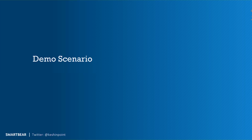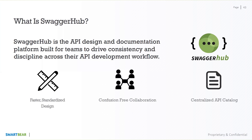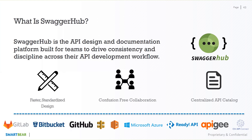Thank you for bearing with me so far. Now let's see some of these things in action. SwaggerHub is an API design and documentation platform built for teams. You can design interfaces and accelerate your API lifecycle, with out-of-the-box integrations with source control, API development platforms, API management platforms, webhooks, and more — helping enterprises scale their API development.